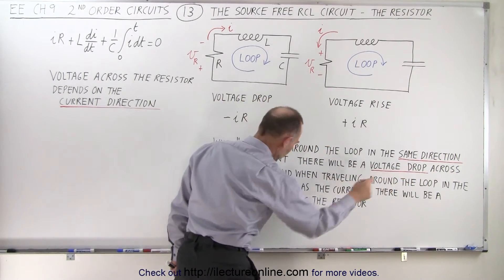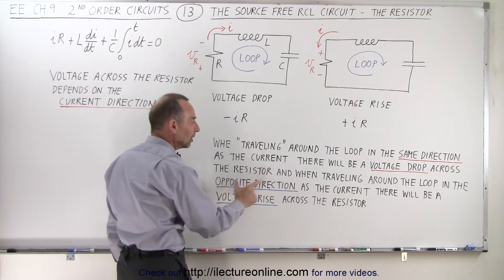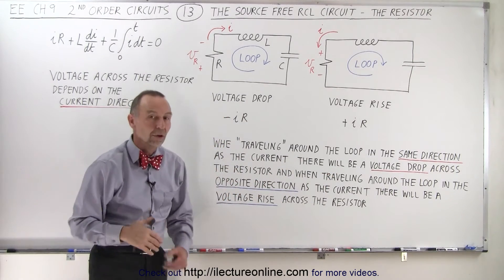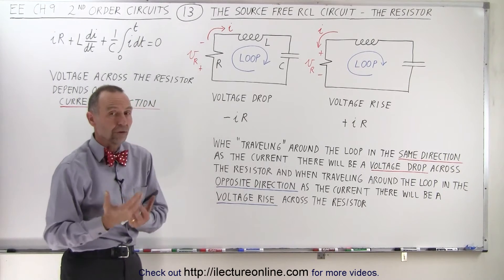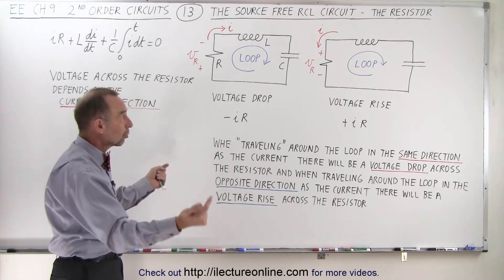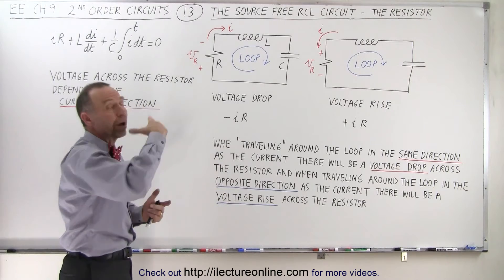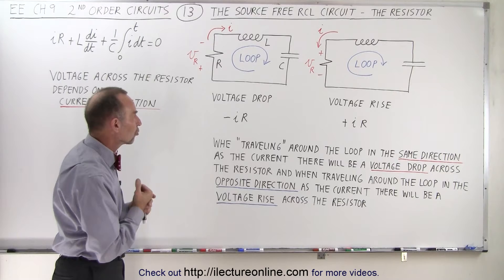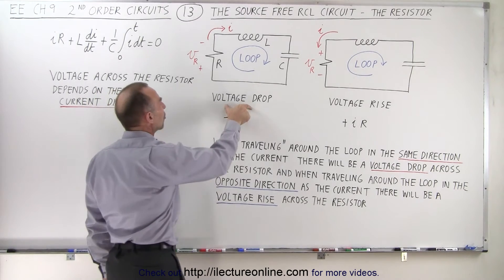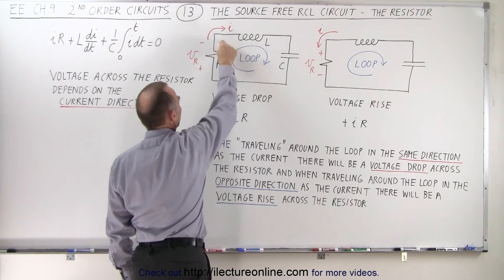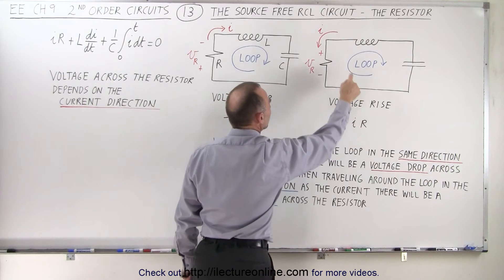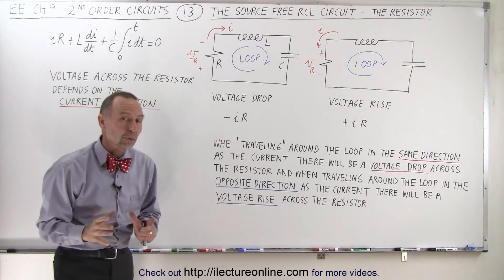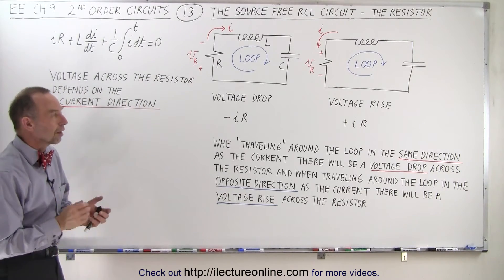And when traveling around the loop in the opposite direction to the current, there will be a voltage rise across the resistor. So the voltage rise and voltage drop across the resistor simply depends on the direction of the current and which way we travel around the loop as we sum up all the voltage rises and voltage drops — a voltage drop when traveling in the same direction, a voltage rise when traveling in the opposite direction. That's how we determine the polarity of the voltage across the resistor.